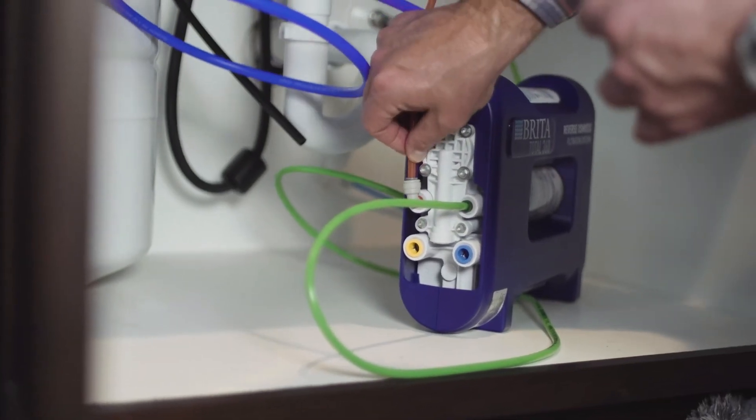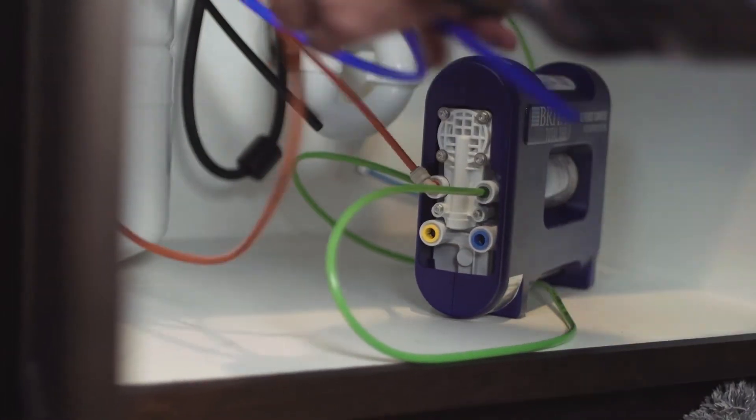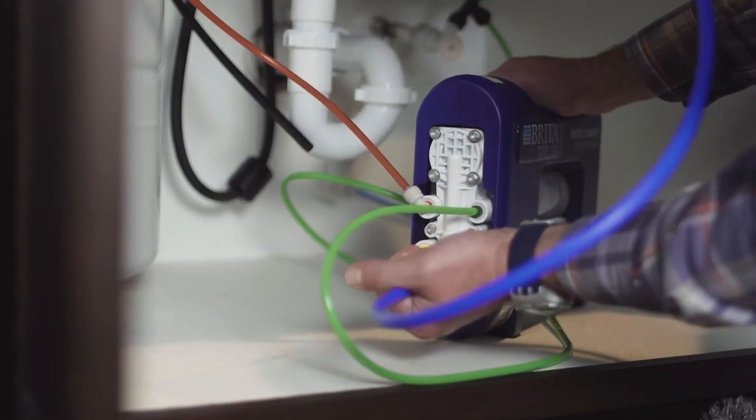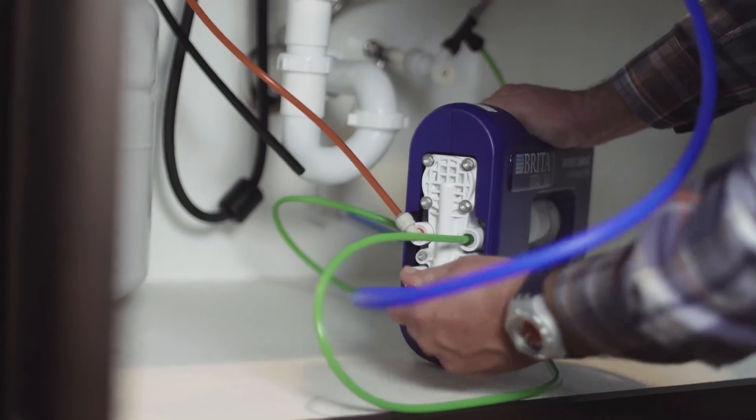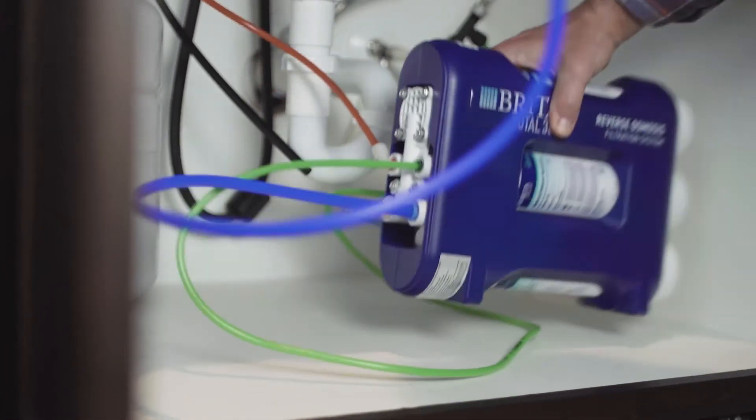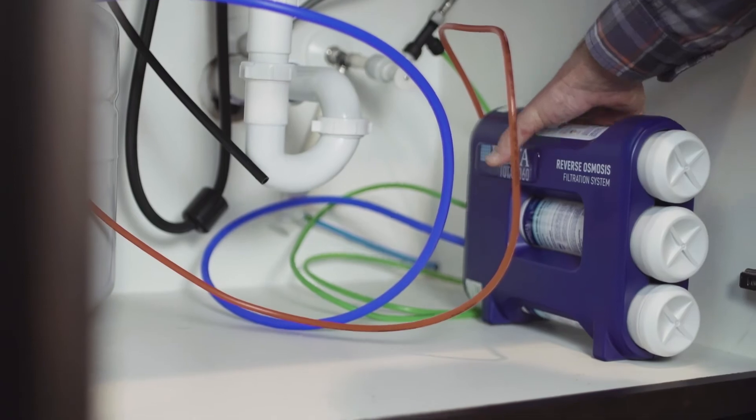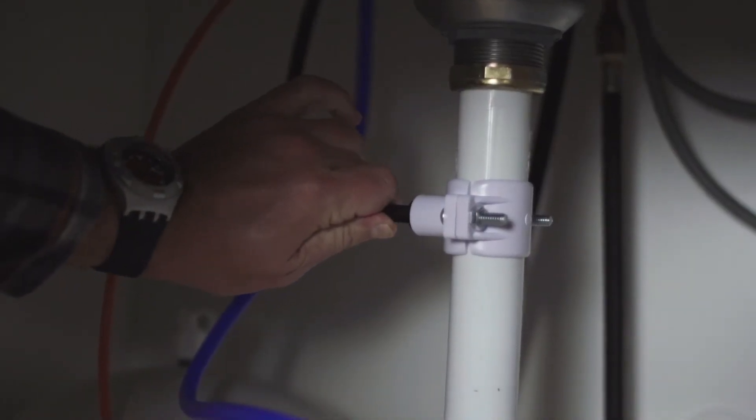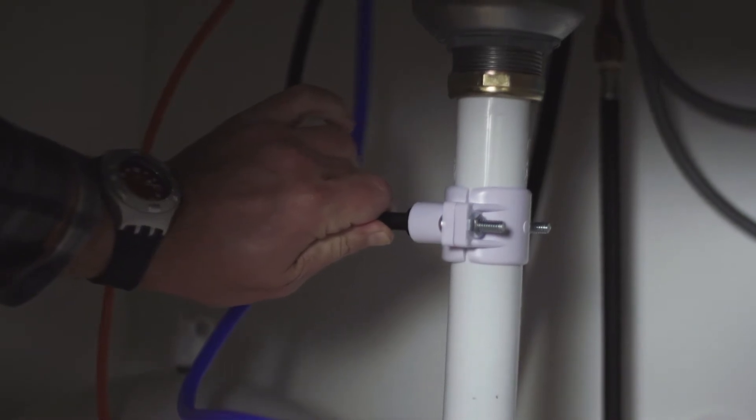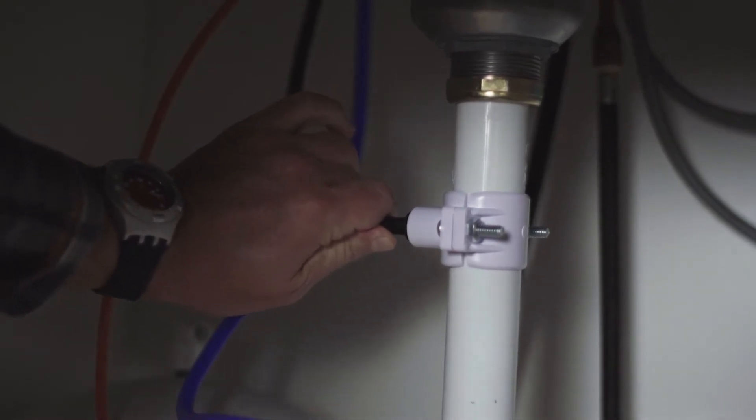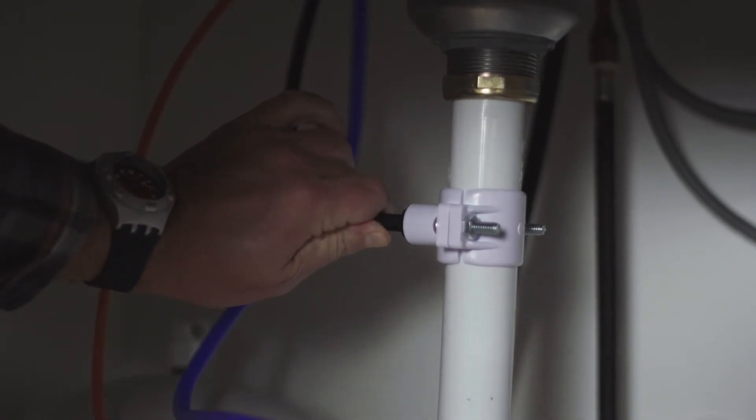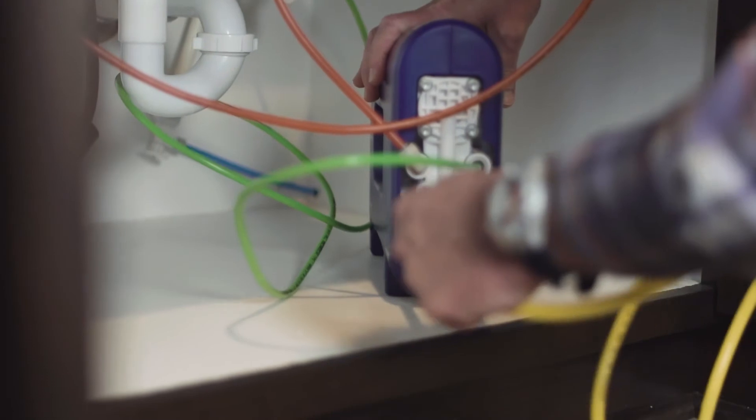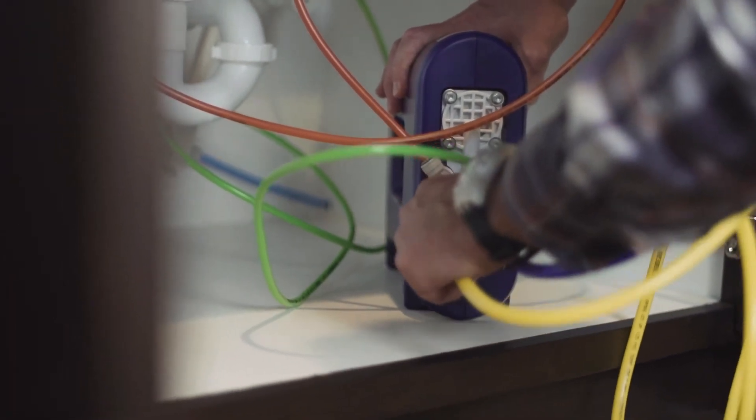Attach the blue tubing by pushing it into the fitting until it stops or seats. You should feel the tubing stop, then pull firmly on the tube to ensure it's secure. Next, in the same way, connect the red tubing from the faucet to the filter assembly, then connect the black tubing to the drain adapter. This should be the shortest, most direct route from the faucet. All of these should snap into place quite easily using push-in fittings, but always check with a firm tug to make sure they're secure. Lastly, we need to connect the yellow tubing from the RO assembly to the storage tank.